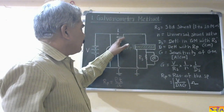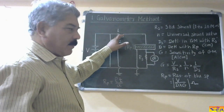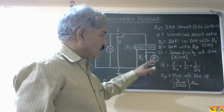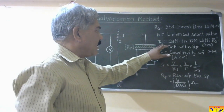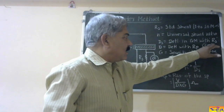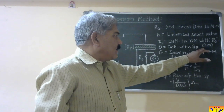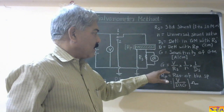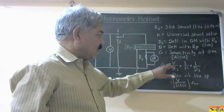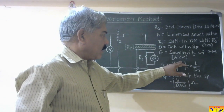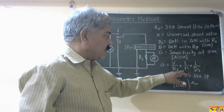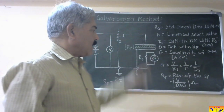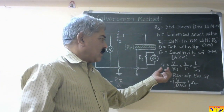Let DS be the deflection in the galvanometer with standard resistance RS, measured in centimeters. The sensitivity of the galvanometer in amperes per centimeter is determined by the equation: sensitivity equals V divided by RS, multiplied by 1 upon n, multiplied by 1 upon DS — where n is the universal shunt ratio and DS is the deflection with the standard resistance. First, we determine the sensitivity of the galvanometer in amperes per centimeter.